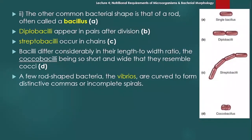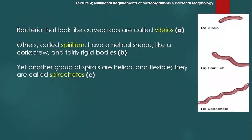A few rod-shaped bacteria called vibrios are curved to form distinctive comma shapes or incomplete spirals۔ یاد رکھیں کہ comma shape bacteria — یعنی rod shape ہیں لیکن comma shape کی طرف مائل ہیں — ایسے bacteria کو vibrio بولتے ہیں۔